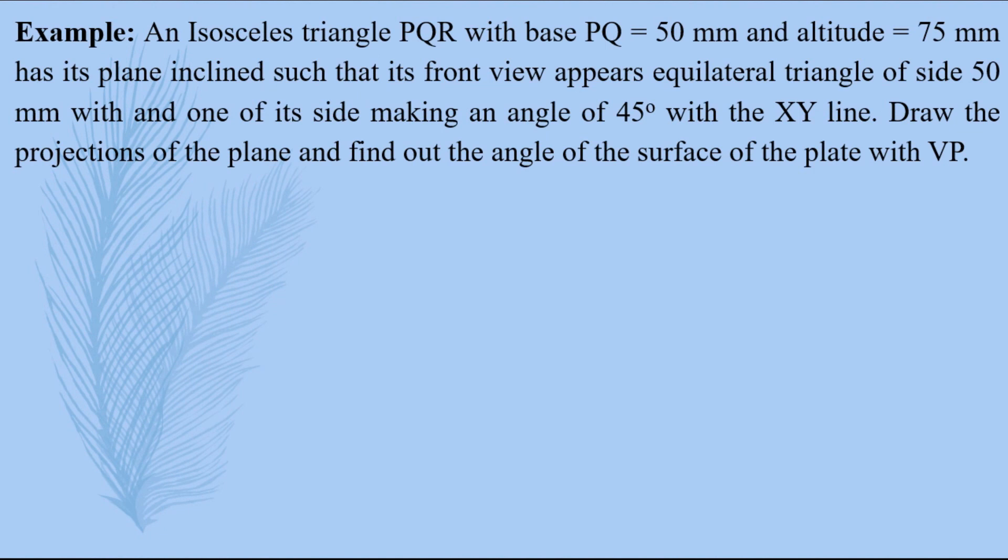An isosceles triangle PQR with base PQ equals to 50 mm and altitude 75 mm has its plane inclined such that its front view appears an equilateral triangle of side 50 mm with one of its side making an angle of 45 degrees with xy line. Draw the projections of the plane and find out the angle of the surface of the plate with VP.